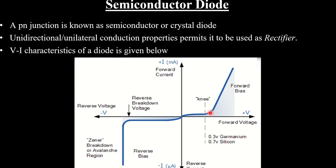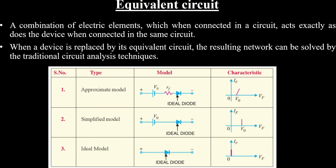That covers the VI characteristics of an ordinary diode. To study circuits, it is always easier to replace a device by its equivalent circuit. An equivalent circuit is a combination of electric elements which, when connected in a circuit, acts exactly as the device does when connected in the same circuit.